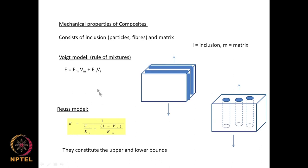These are the upper and lower bounds for the E value. If you are not very sure how to calculate E for a blend, the best approach is to use both models — you will get two values, and the real-life answer will be between those two. Use the Voigt model if the load is parallel, and the Reuss model if they are perpendicular.